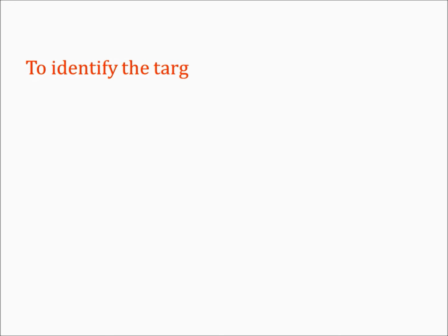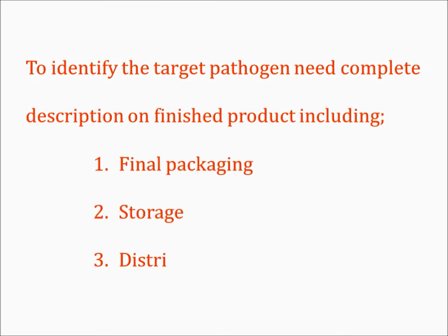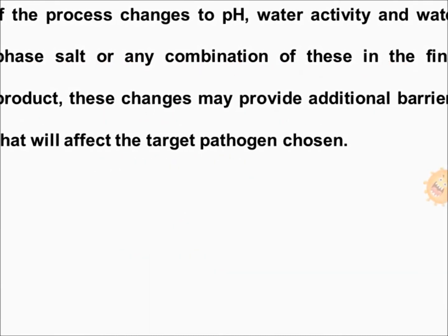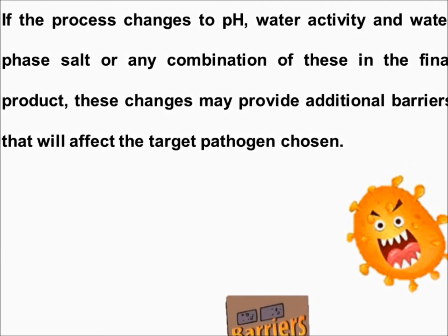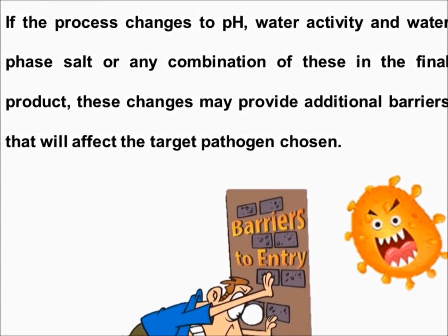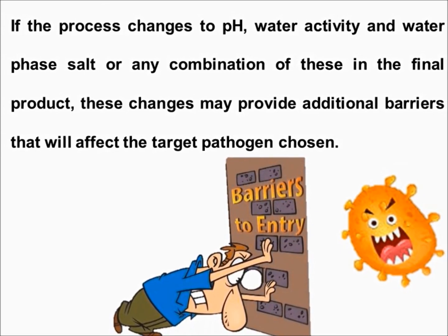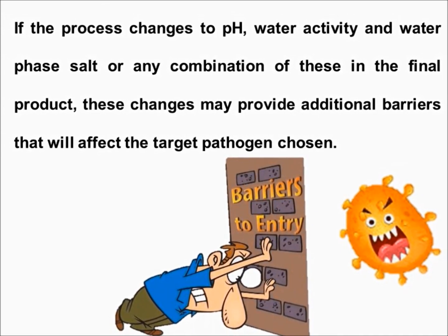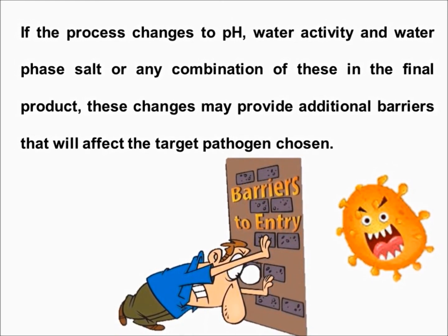To identify the target pathogen, a complete description of the finished product is needed, including final packaging and distribution. If the process changes with respect to pH, water activity, water phase salt, or any combination of these changes in the final product, these changes may provide additional barriers that will affect the target pathogen chosen.